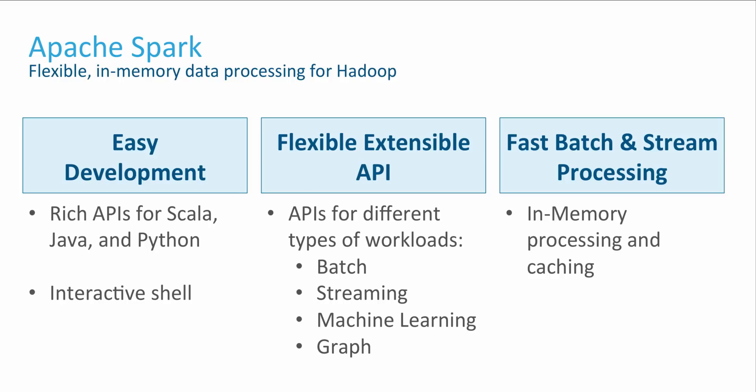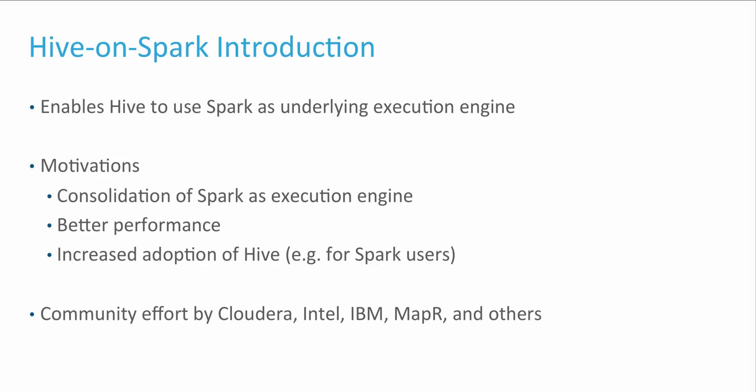That last bit is what makes Hive on Spark faster than Hive on MapReduce, as we will see later. With our brief introduction of Spark, let me now introduce Hive on Spark. It enables Hive to use Spark as a data processing layer, providing the advantages of Spark to Hive.